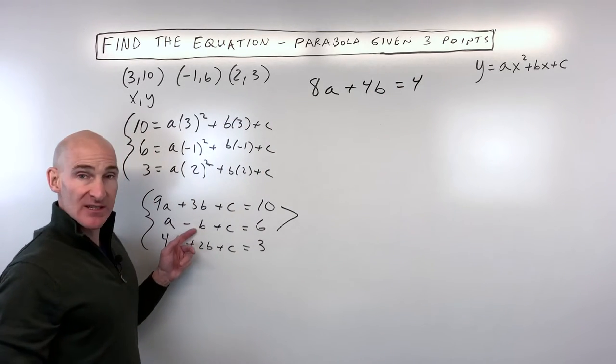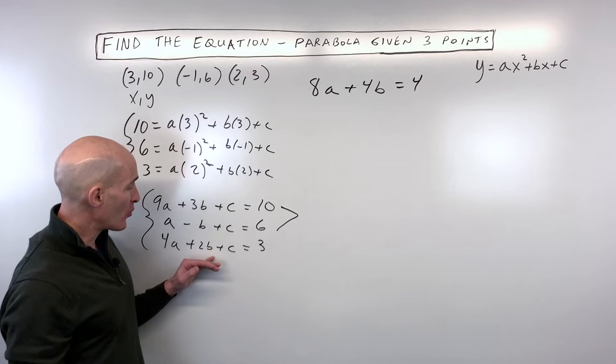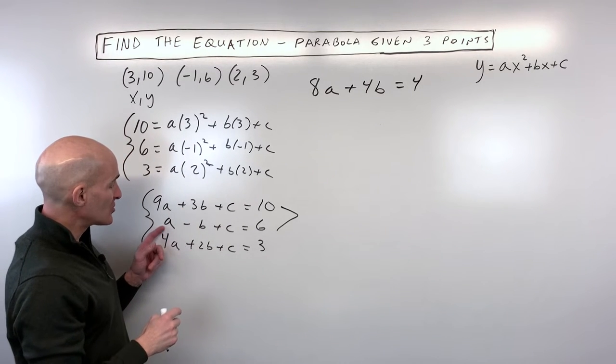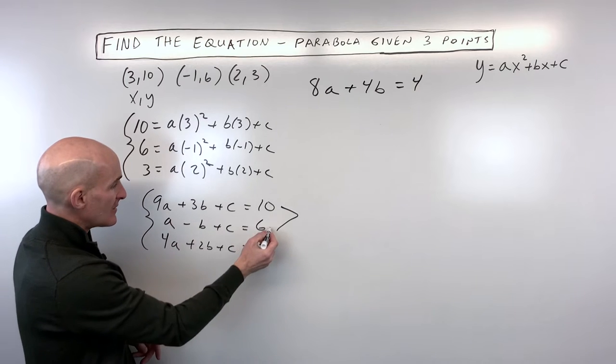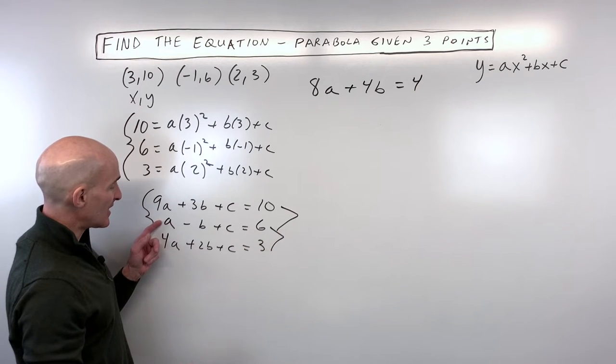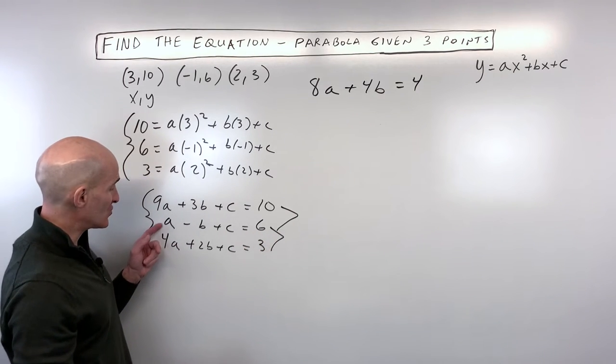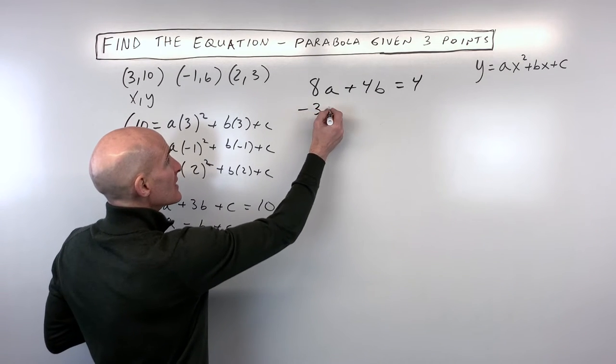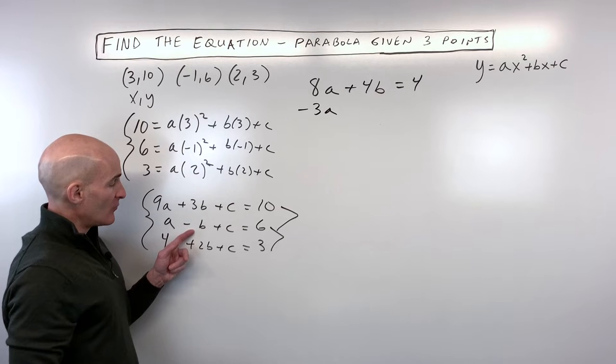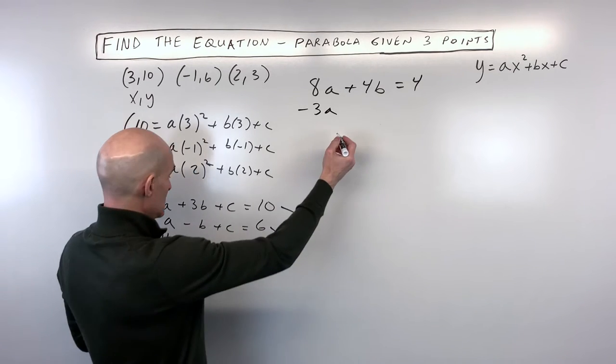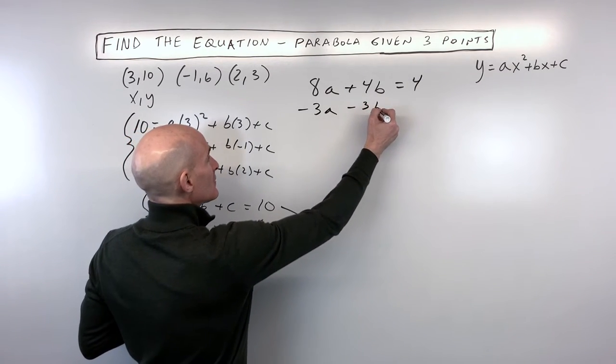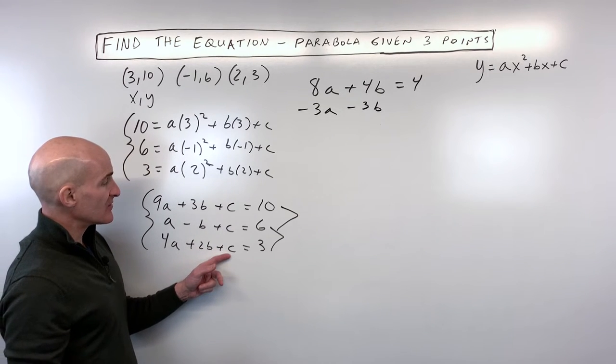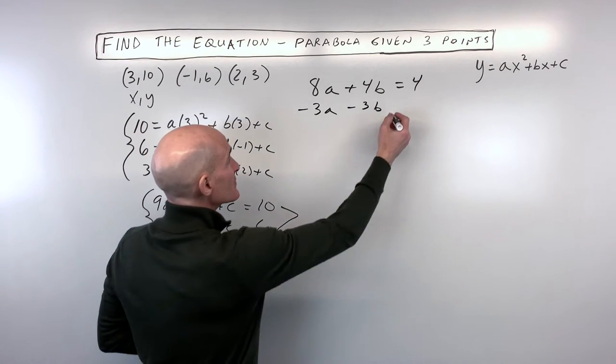Now we've worked with the first and second equations. Now we have to use that third equation. You can either combine it with the first or the second. I'll use the second equation and do that same technique where I'm going to take the second equation minus the third equation. So 1a minus 4a gives us negative 3a. Negative 1b minus 2b gives us negative 3b. And c minus c gives us 0. And 6 minus 3 gives us 3.